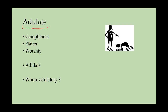Our next word is 'adulate,' which is very important and commonly used. First, there is something called a compliment — when you positively praise somebody, your intention is sincere. Somebody has done something good, so you give them a compliment. Then there can be insincere praise, which is called flattery or to flatter. So a compliment is positive, and flattery is negative — the person doesn't actually have the qualities you're praising.